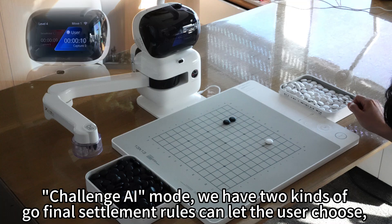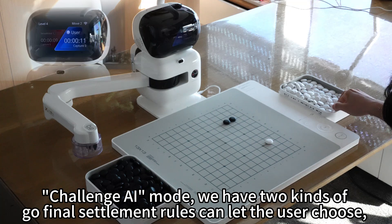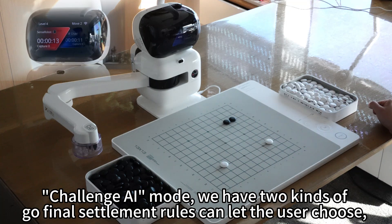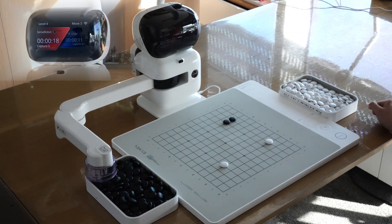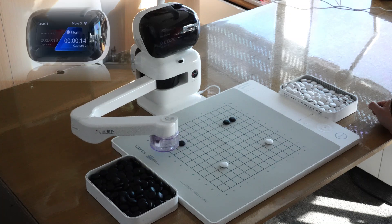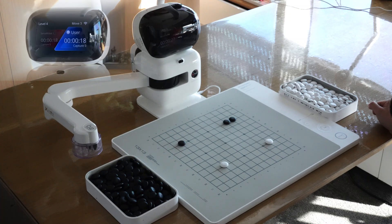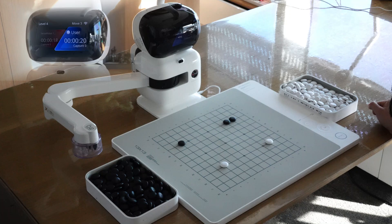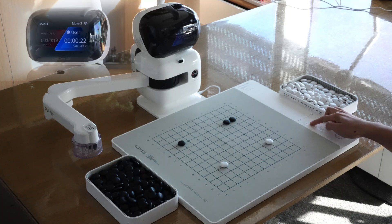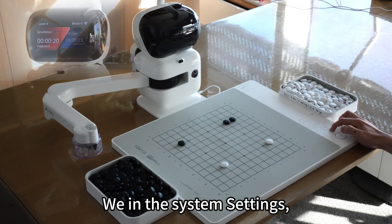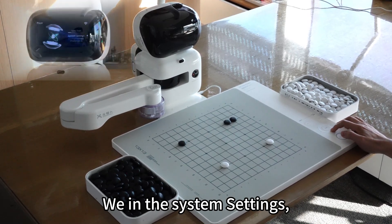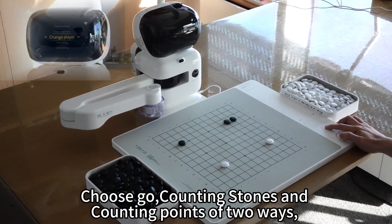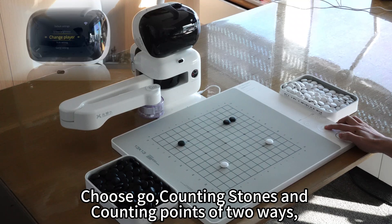Challenge AI mode has two kinds of Go final settlement rules that can let the user choose: counting stones and counting points. We are in the system settings and can choose counting stones and counting points.